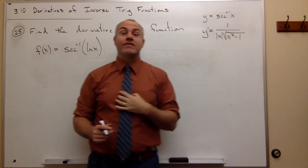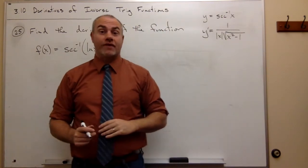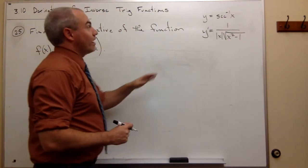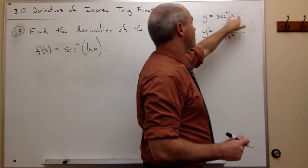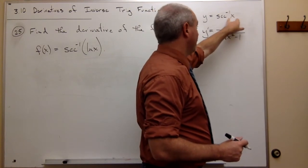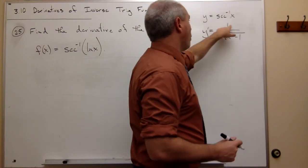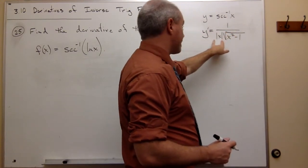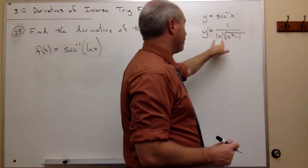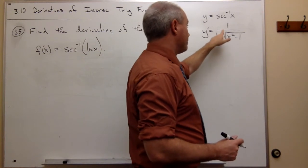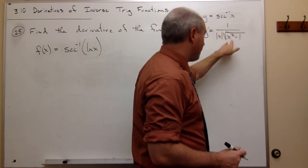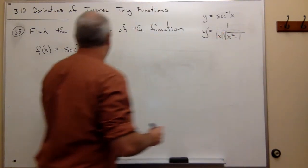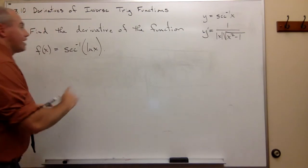So if I have sec⁻¹(something), then it would be 1 over that something's absolute value times the square root of that something squared minus 1. In this case, our something is ln(x).